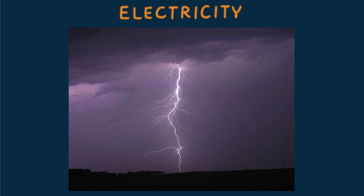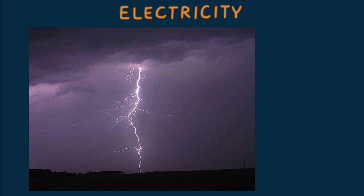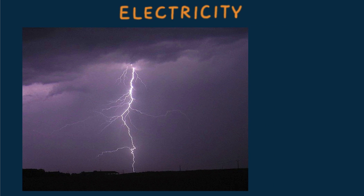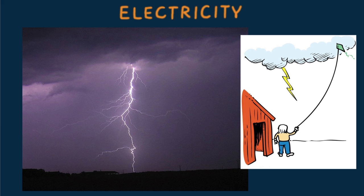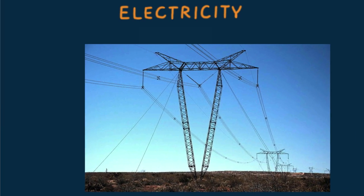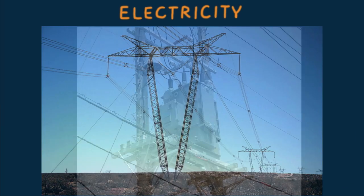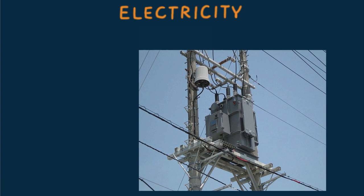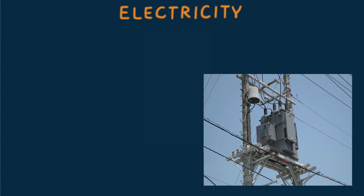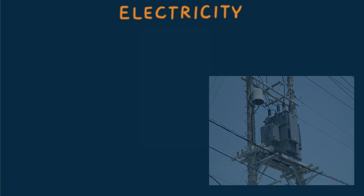Lightning was something that early humans and other creatures always contended with. Learning about the electrical nature of lightning occurred with Benjamin Franklin in the 18th century. As a means of carrying energy from one place to another, electricity has revolutionized transport, heating, lighting, computation, and communications. Electricity is the backbone of modern industrial society.